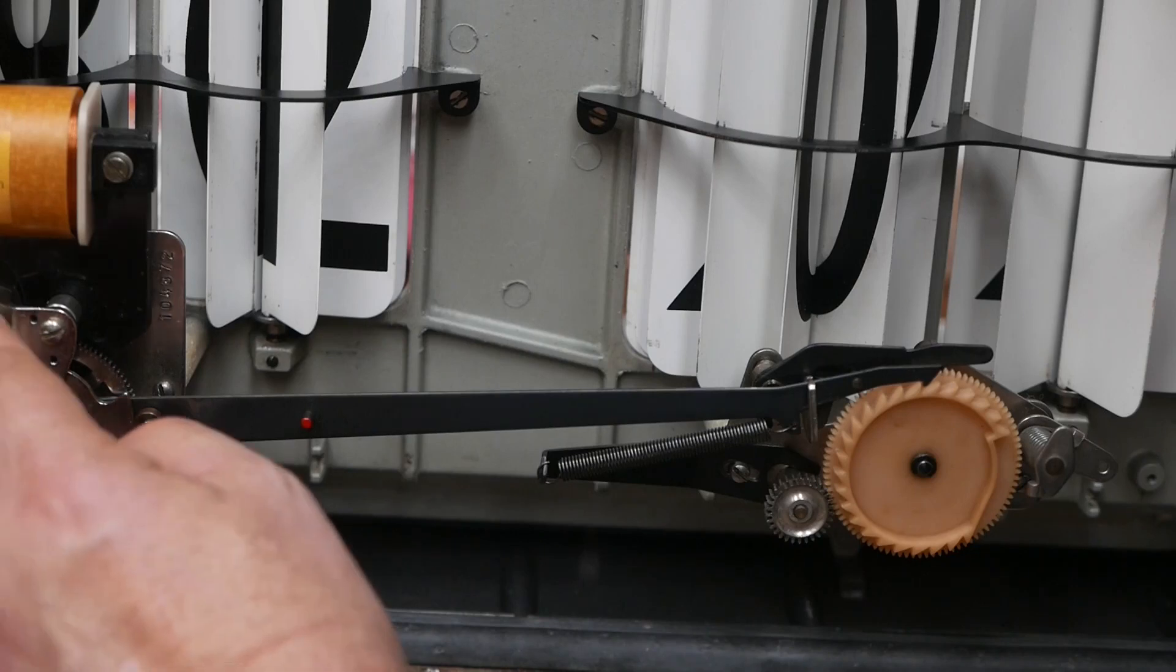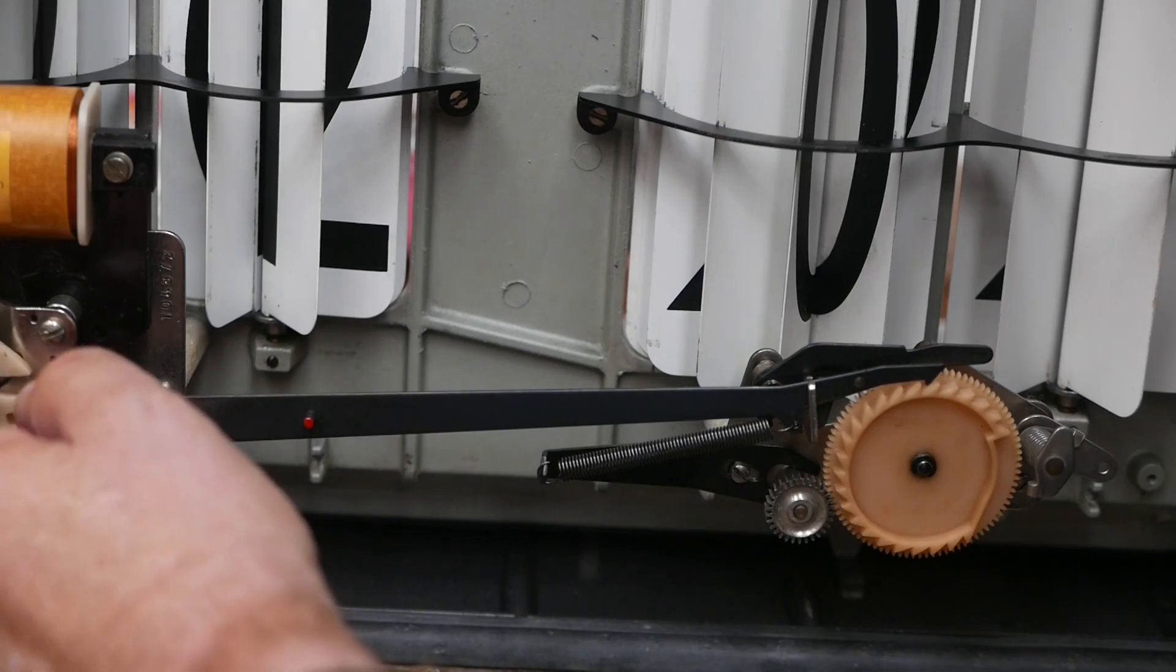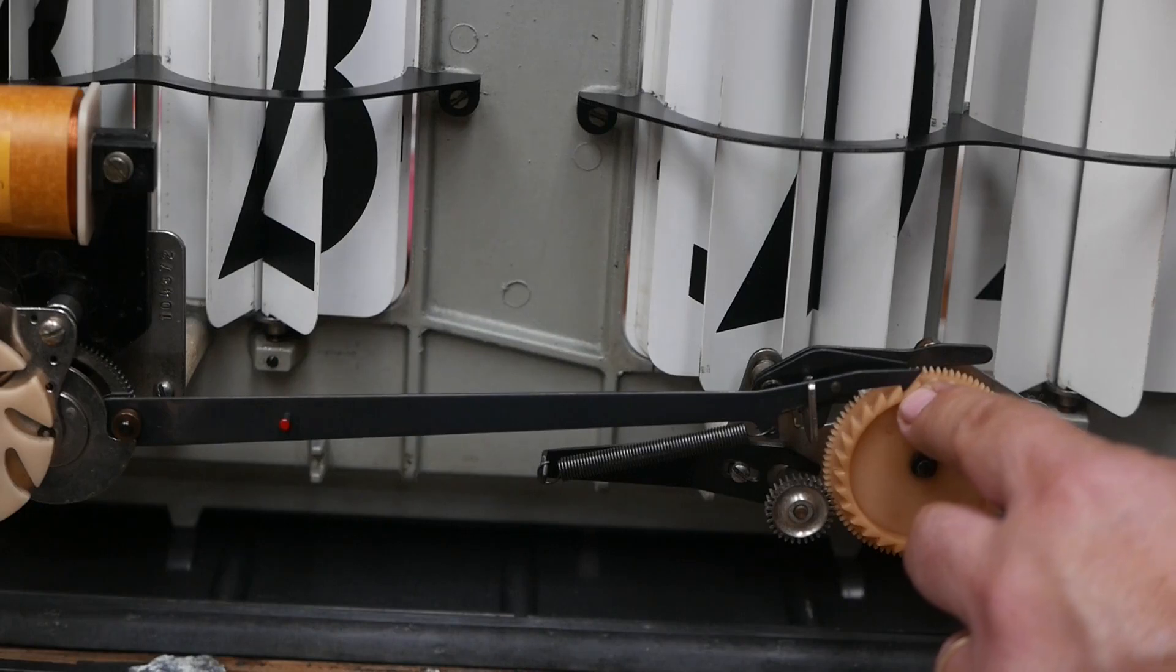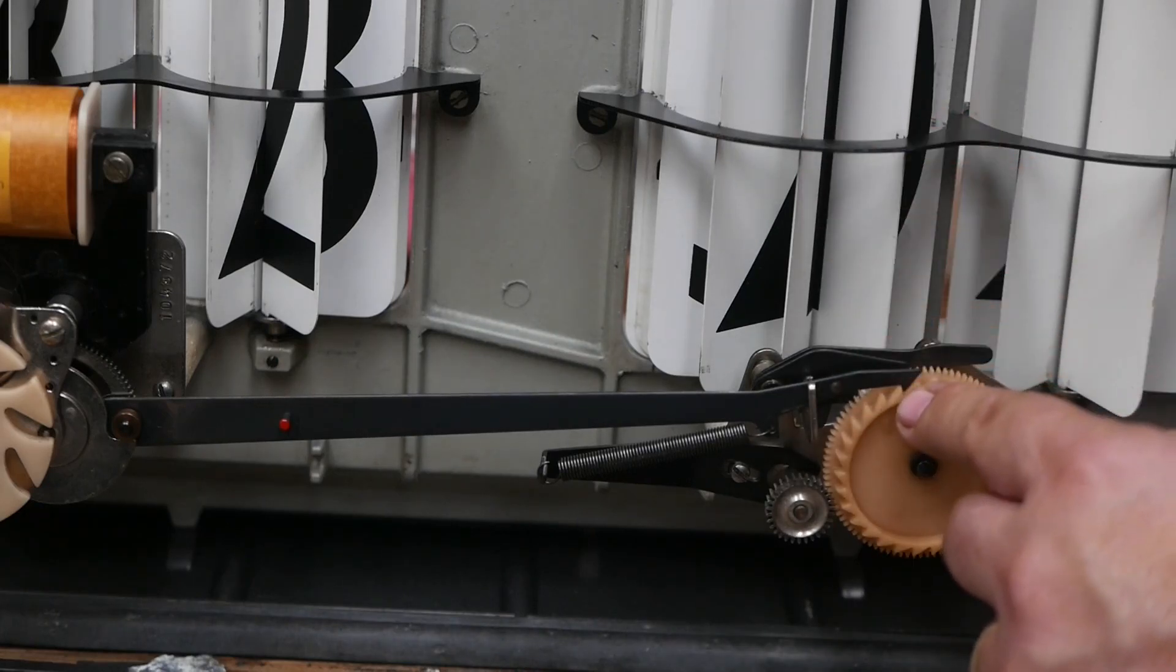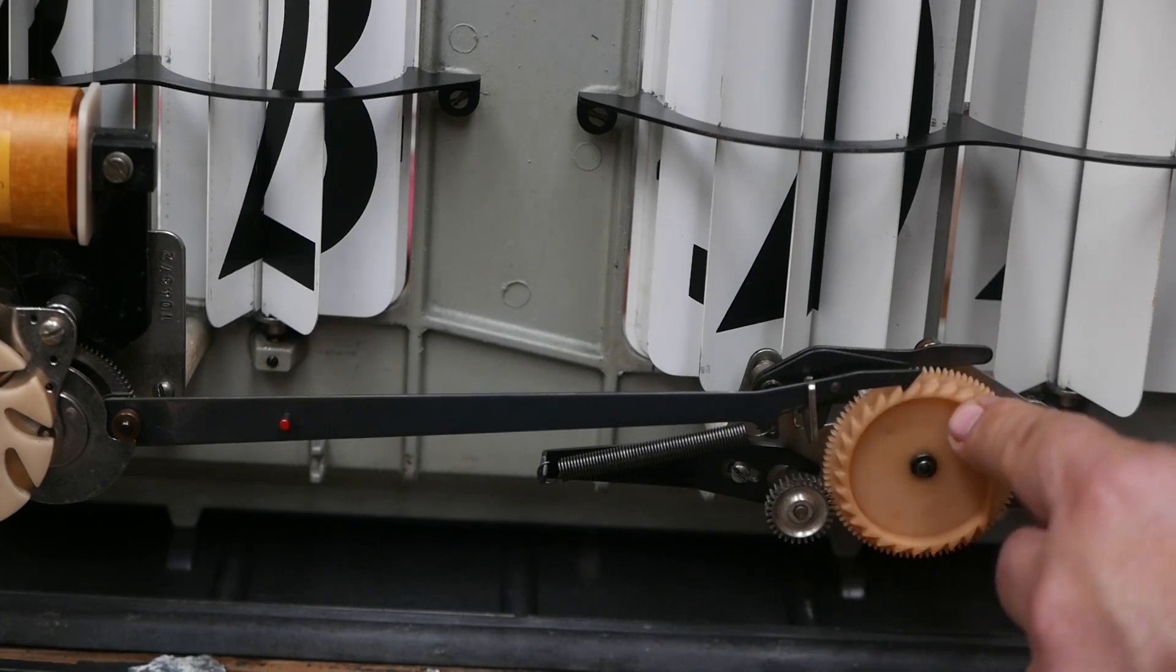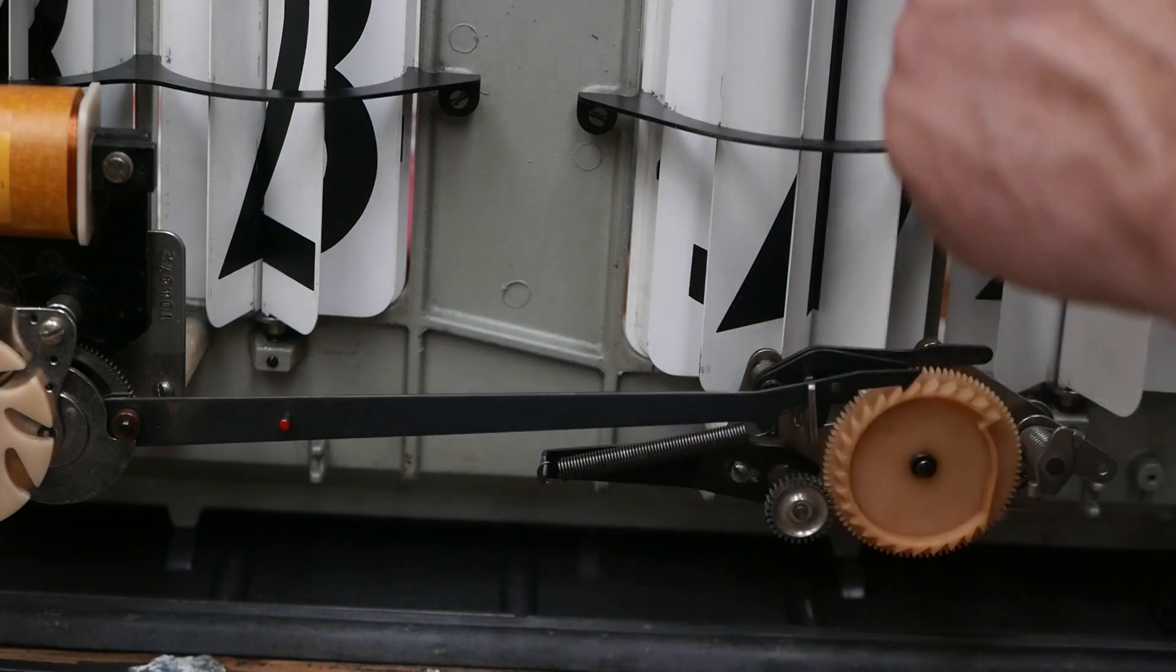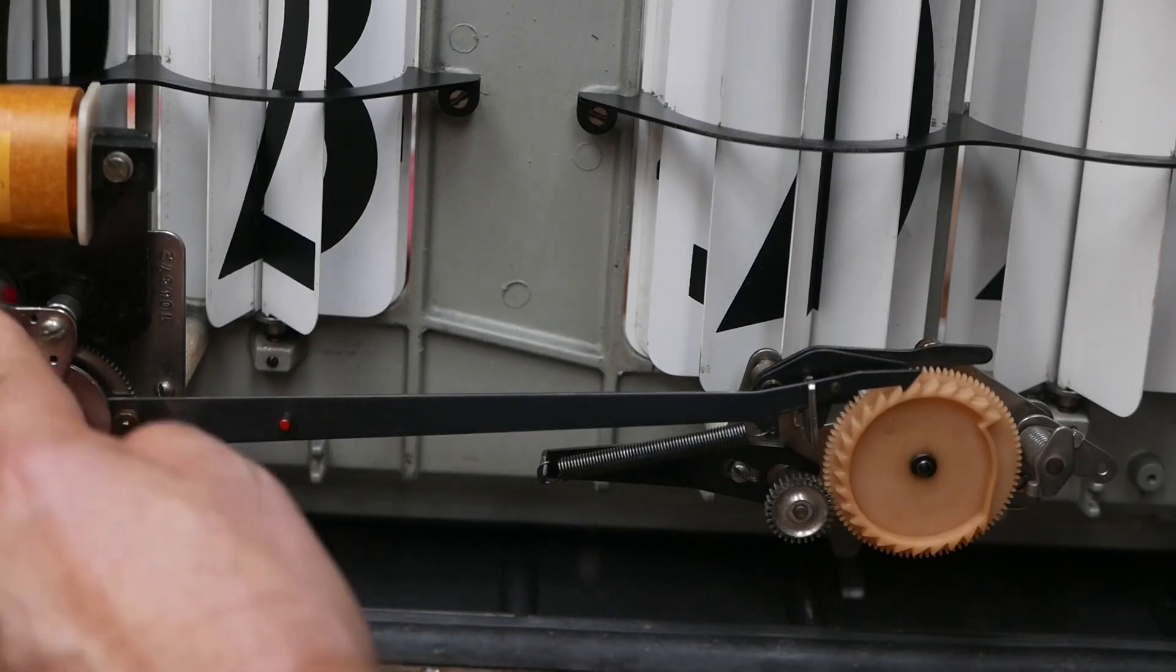So if we advance this a minute at a time, we see that that ratchet there pulls back this wheel and advances the cards by one hour. So that obviously happens every 60 minutes, and this is a 24 hour clock so there are 24 teeth around here. And they operate a gear which goes through another bevel gear and operates this vertical shaft that rotates the cards.